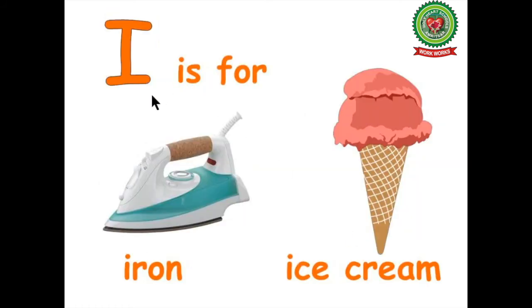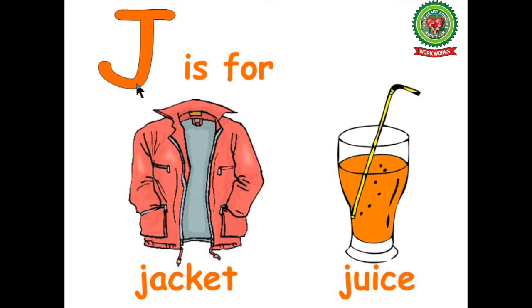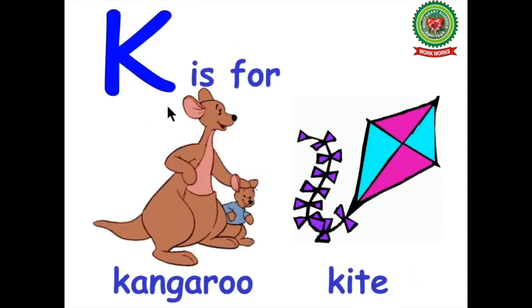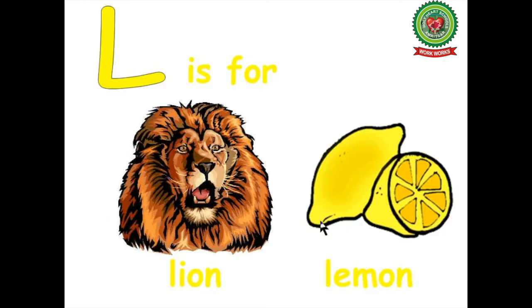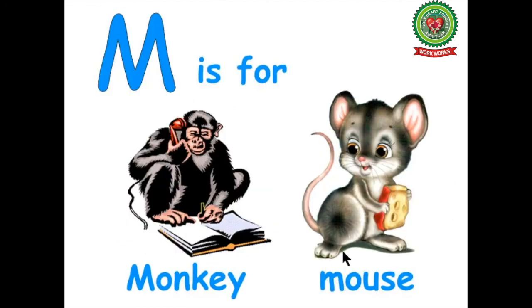I, I, iron. I, I, ice cream. J, J, jacket. J, J, juice. K, K, kite. L, L, lion. L, L, lemon. M, M, monkey. M, M, mouse.